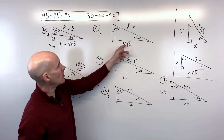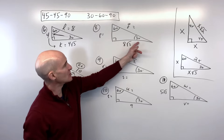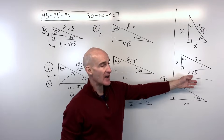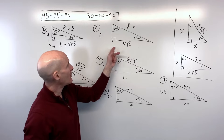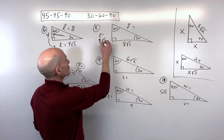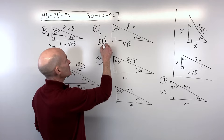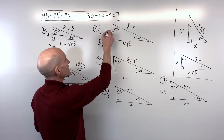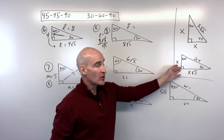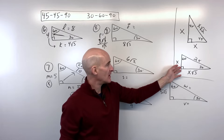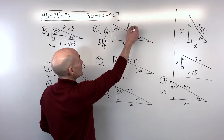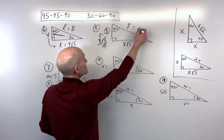For number eight, they're giving us the side across from the 60-degree angle — the longer leg, the x√3 side. We divide by √3: 8√3 divided by √3, the square root of 3s cancel, giving us 8 for the short leg. Once you have the short leg, double it to get the hypotenuse: 8 doubled is 16.